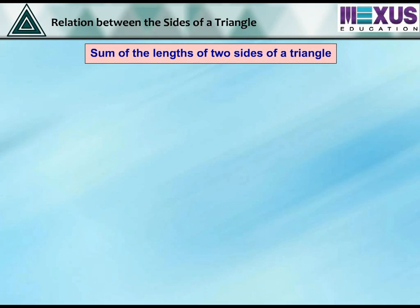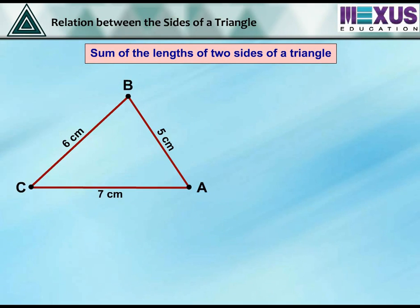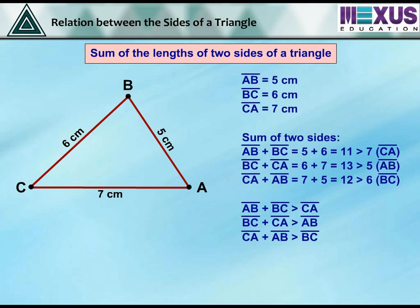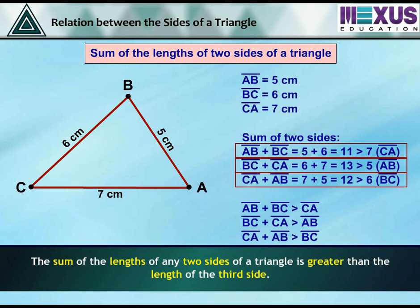Sum of the lengths of two sides of a triangle. Draw triangle ABC. Find the sum of any two sides and compare it with the third side. We see that the sum of the lengths of any two sides of a triangle is greater than the length of the third side.